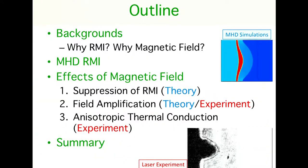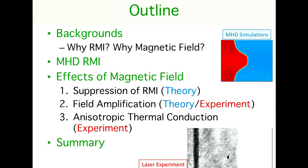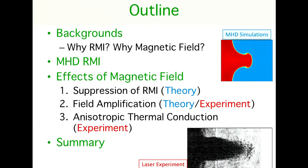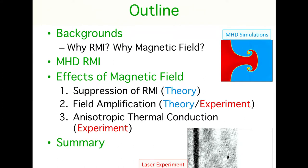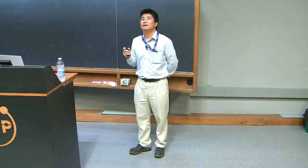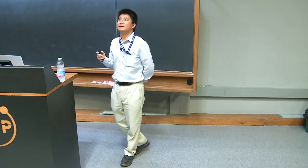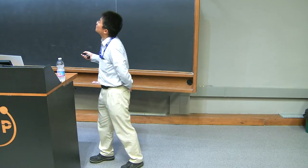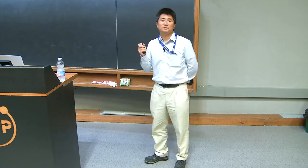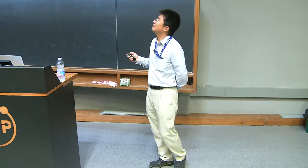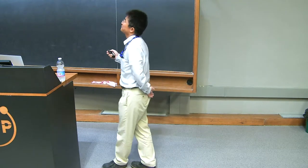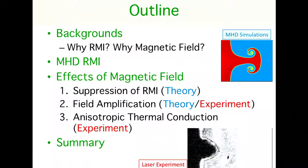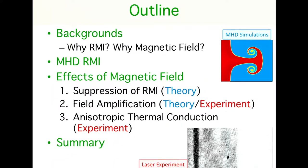This is the outline of this talk. First, I'll talk about the background of my research — why RMI, why magnetic field. And then I'll talk about three effects of the magnetic field on the interfacial instability: one is the suppression of the instability by a strong magnetic field; the second one is field amplification by turbulent motion; and the last one is the effect of anisotropic thermal conductivity.